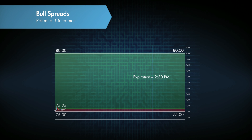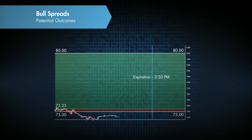Let's pretend that we executed this order at 75.25. A couple of things can happen. The first scenario is we're just wrong. The market moves down and keeps moving down. No matter what the underlying market does, though, our maximum possible loss on this contract was the 25 points, or the $25 that we put up initially. So in this first scenario, the market continues to move against us and we lose our initial 25.